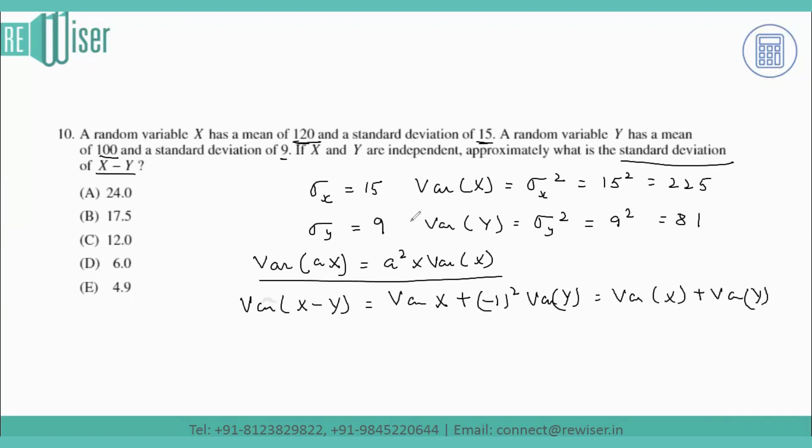We already found the variance of X, which is 225, and the variance of Y, which is 81. Placing those values, we get 225 plus 81, which gives us 306. So the variance of X minus Y is 306.